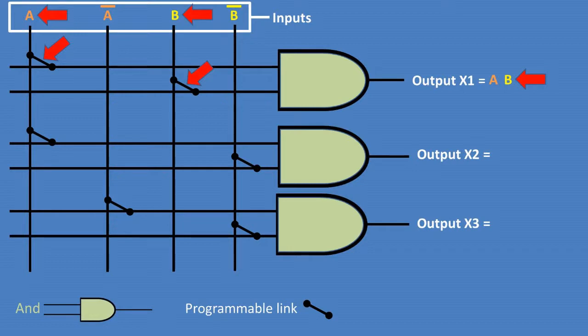For output X2, the A and NOT B are connected by programmable links, therefore the output is A AND NOT B. And finally, for output X3, the NOT A and NOT B are connected by programmable links, therefore the output is NOT A AND NOT B.